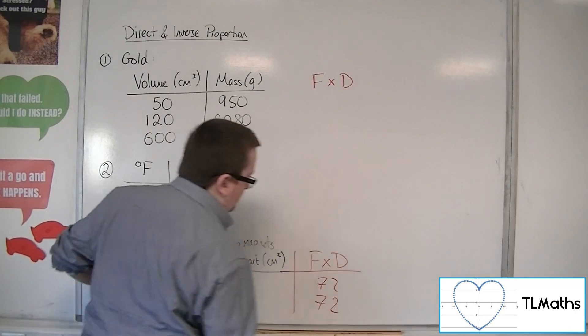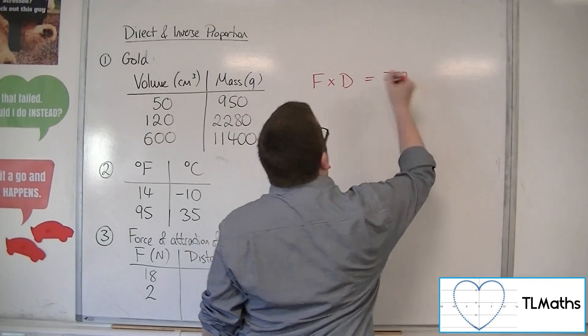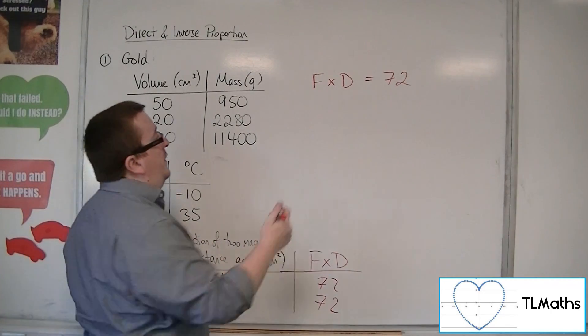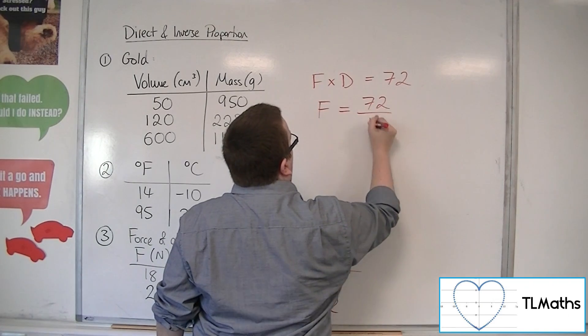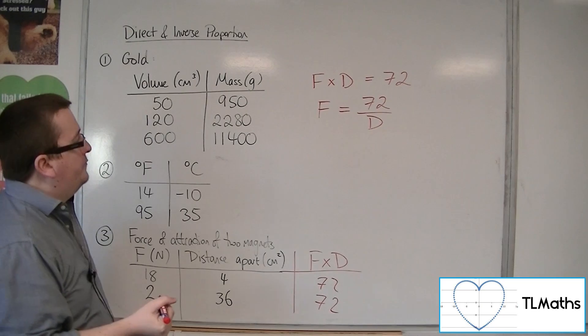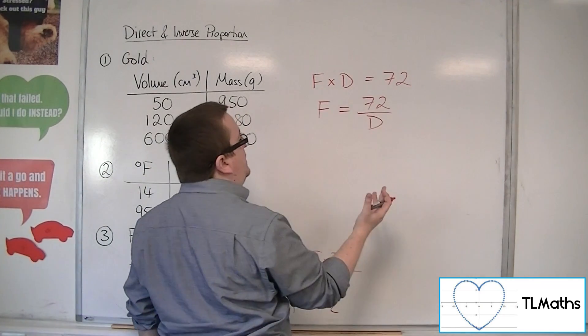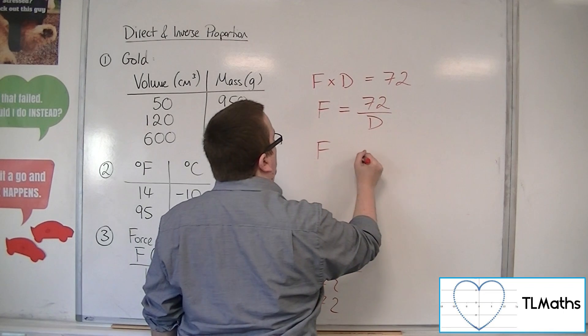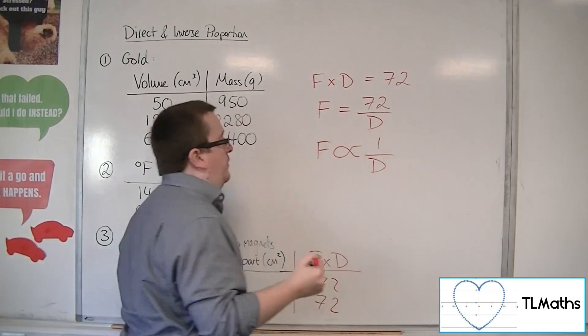And the fact that we're getting the same value is showing us that the force is inversely proportional to the square of the distance apart. The fact that I can write it as F equals 72 over D, or F is inversely proportional to the square of the distance.